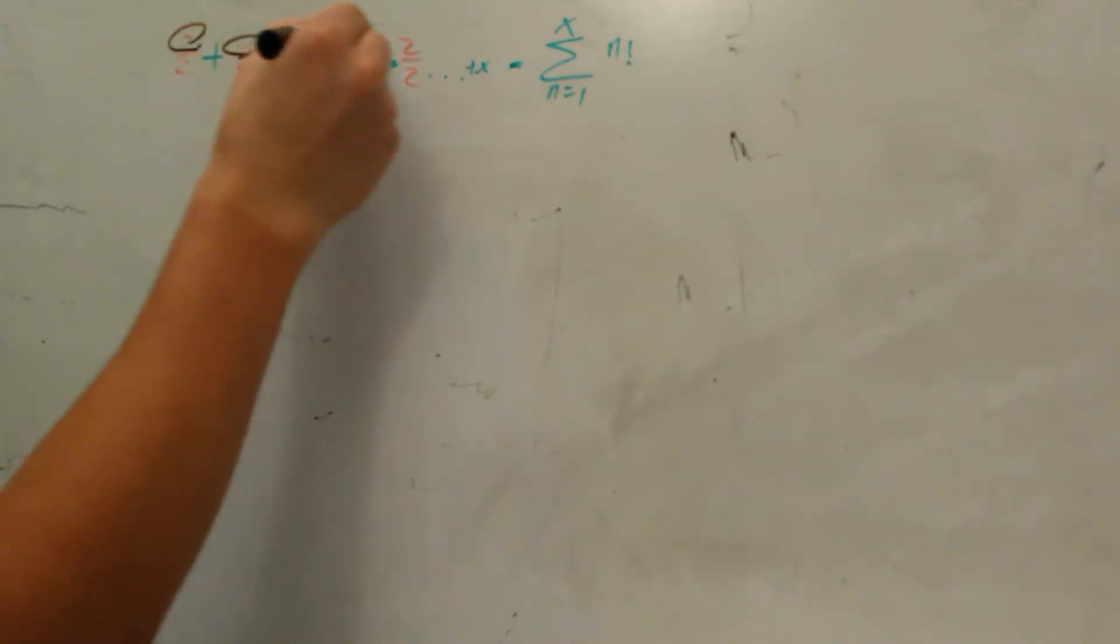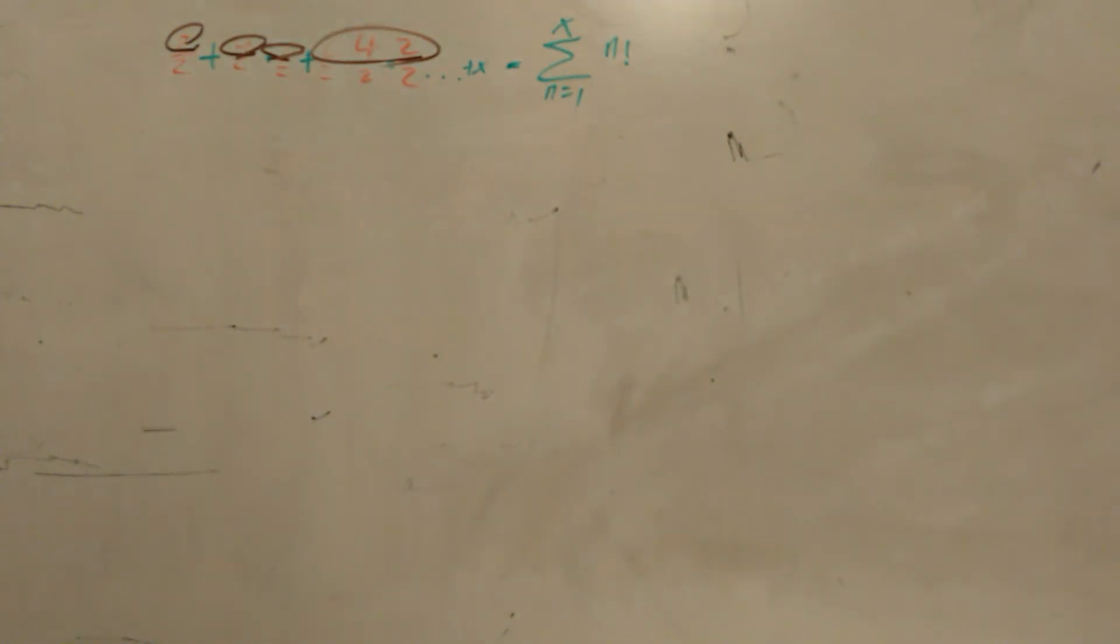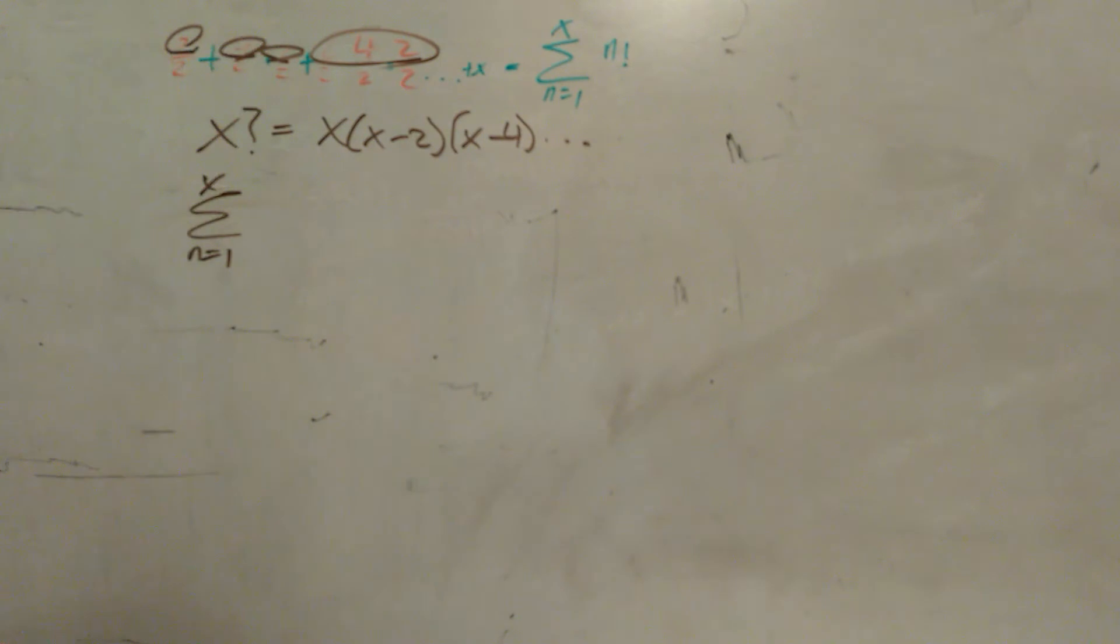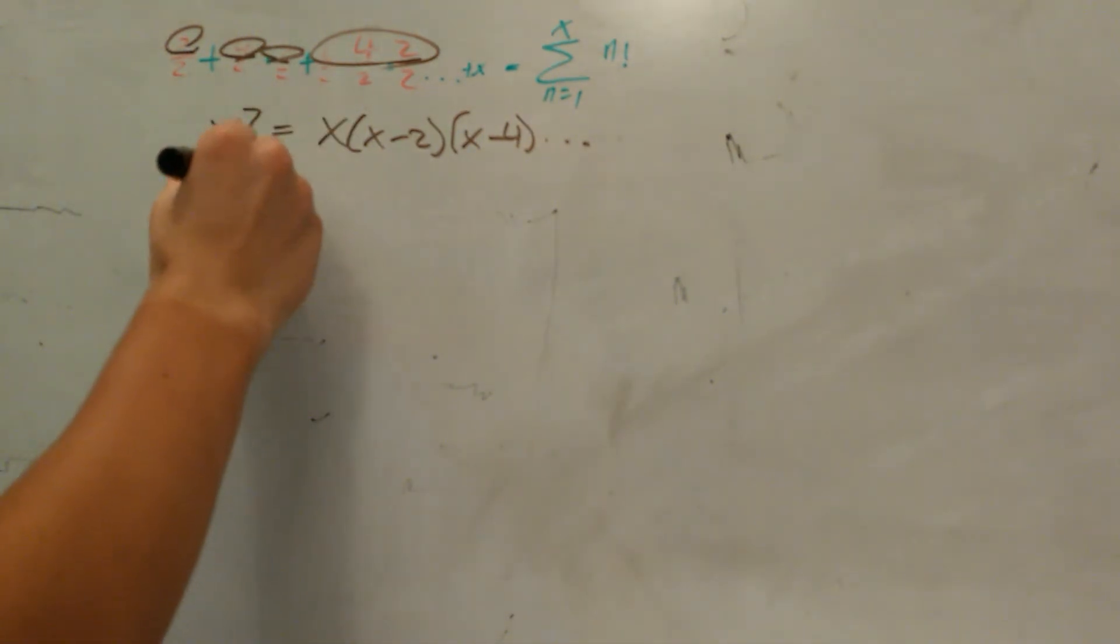So now what we have is each time we have the products of just even numbers. What I'm going to do now is define a function. We'll say that x minus question mark is every other number product, so kind of like a factorial but not. One thing we'll notice is that the leading number is always twice the n value, and it's multiplied by every previous number, which we defined with a question mark.